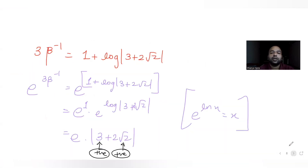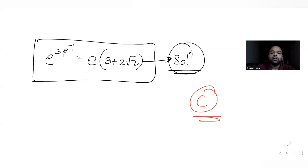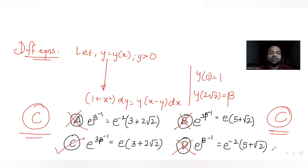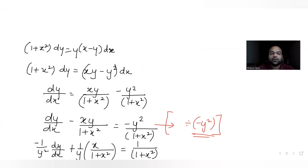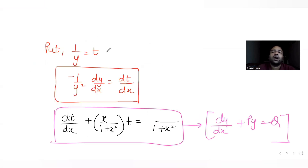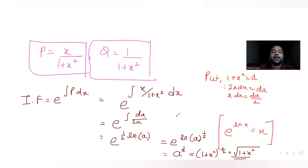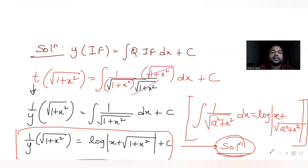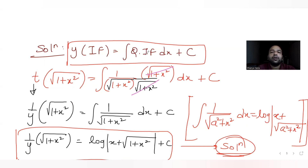To summarize the approach: first we simplified the differential equation, then substituted 1/y = t to convert it to a standard linear form dt/dx + Pt = Q. We found the integrating factor as √(1 + x²), then solved to get the general solution. Applying the condition y(0) = 1 gave C = 1.